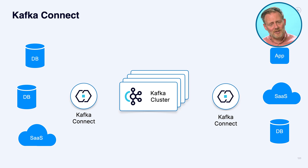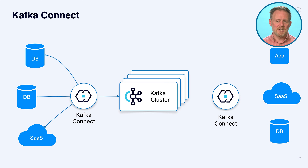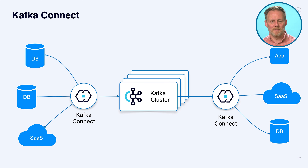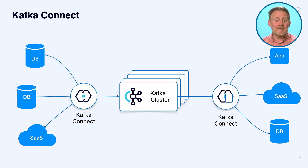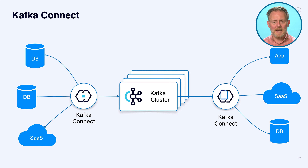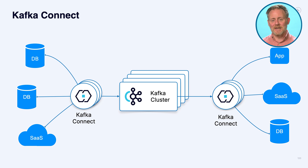You've got source connectors — that's reading from something and producing to a topic — and sink connectors, which are consuming from a topic and writing to some other system out there. When you're being a source connector, you're going to read from, say, that database there. That could be some change data capture process producing to a Kafka topic. And there could be a sink connector looking at that same topic, reading it and writing it to some other external database. So messages flow through Kafka from external systems to other external systems using Kafka Connect. Connect itself is a distributed system; there could be many instances depending on the load, the number of connectors, and the kinds of systems you're talking to.